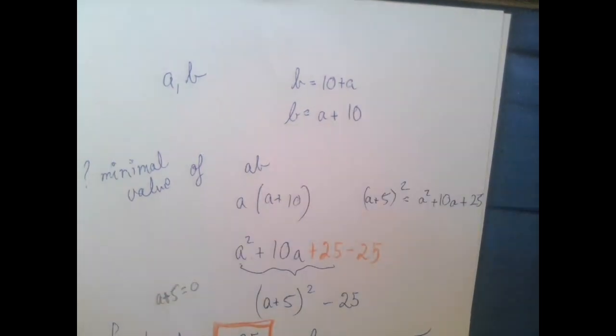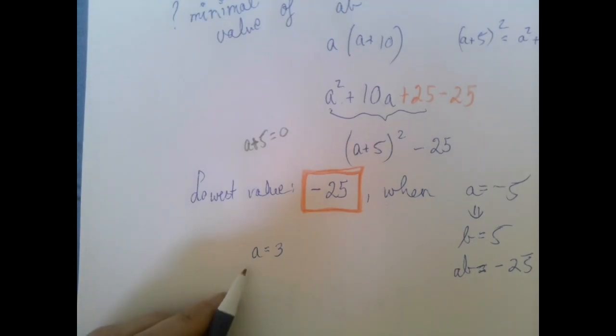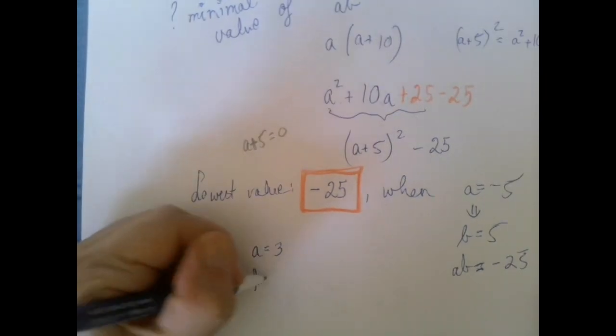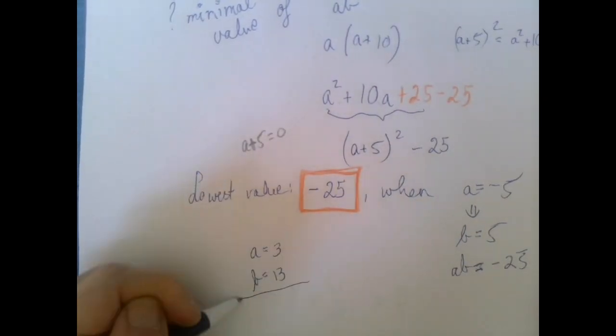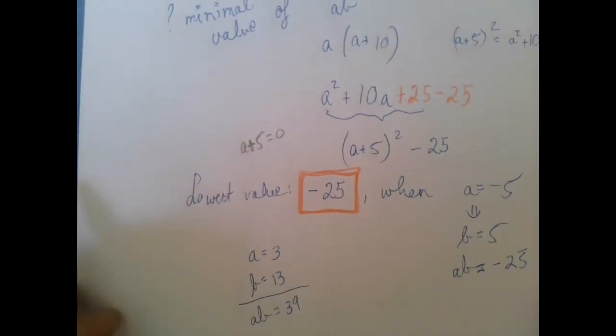Every other a and b should be greater than negative 25. So let's say a is 3. If a is 3, then b is 10 greater than that, b is 13, so the product is 39. That is clearly bigger than negative 25.